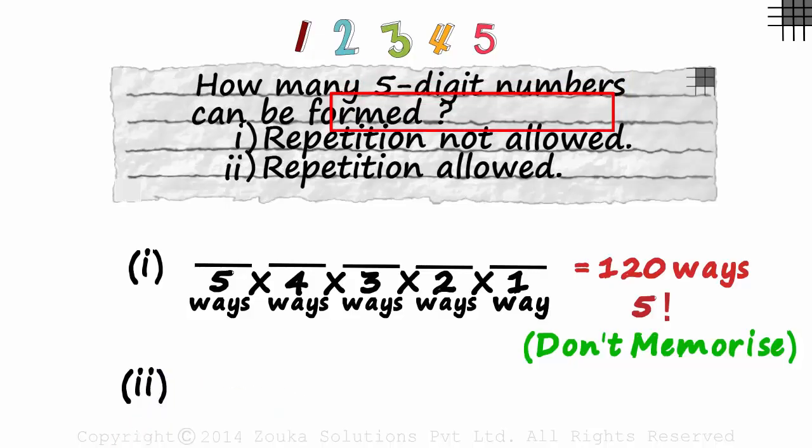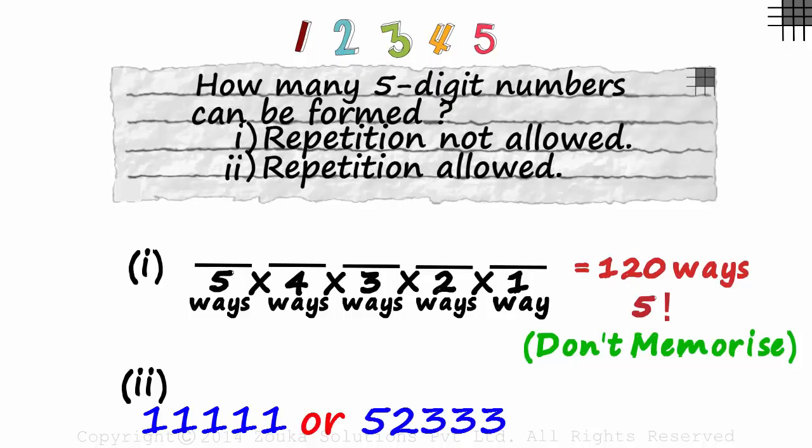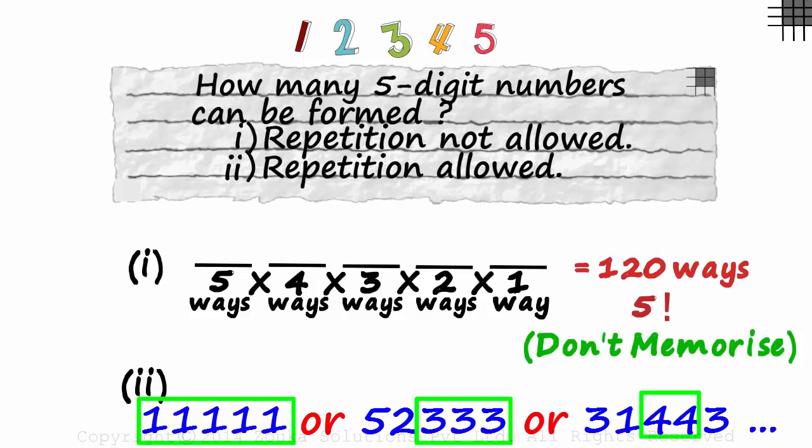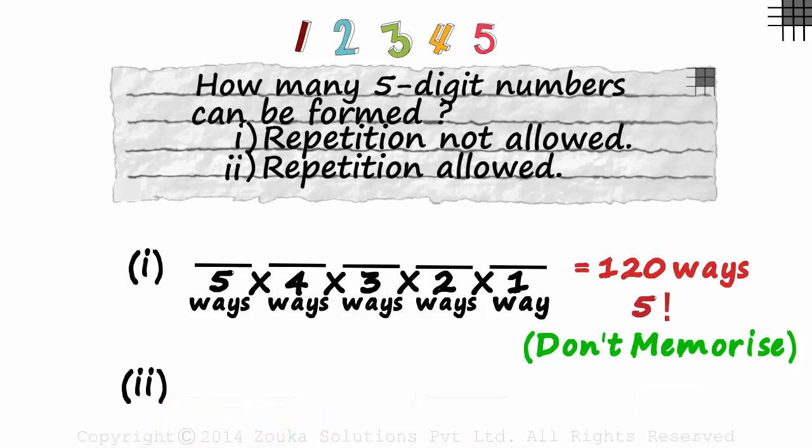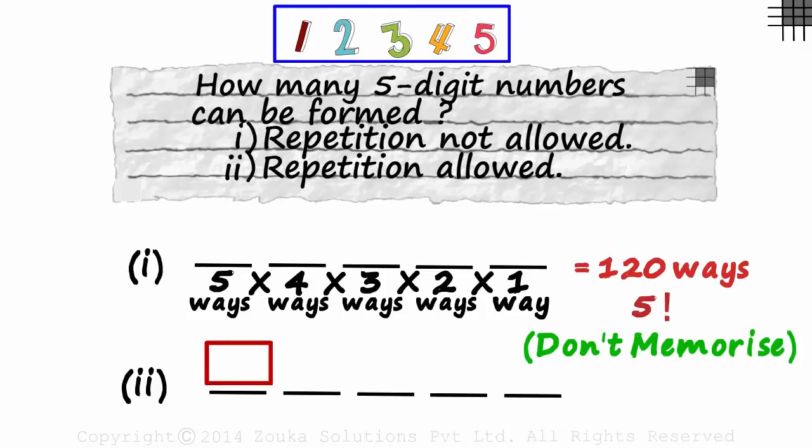Five digit numbers when repetition of digits is allowed. So we are allowed to form numbers like one one one one one, or five two three three three, or three one four four three, where digits are repeated. How do we begin? As always, we go slot by slot. The first slot can be filled with any one of the five digits. It can be filled in five ways.